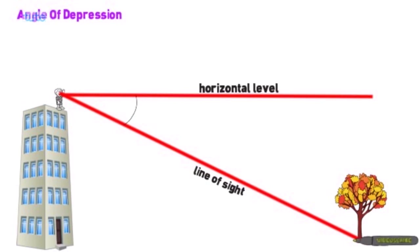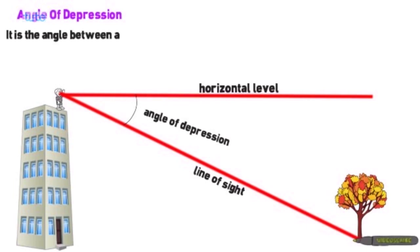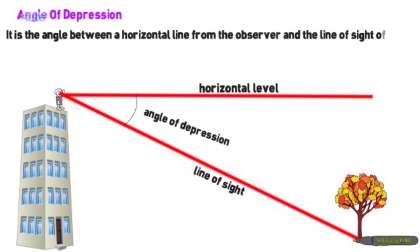These two lines make a particular angle and that angle is called angle of depression. Angle of depression is the angle between the horizontal line from the observer and the line of sight of an object that is below the horizontal line.